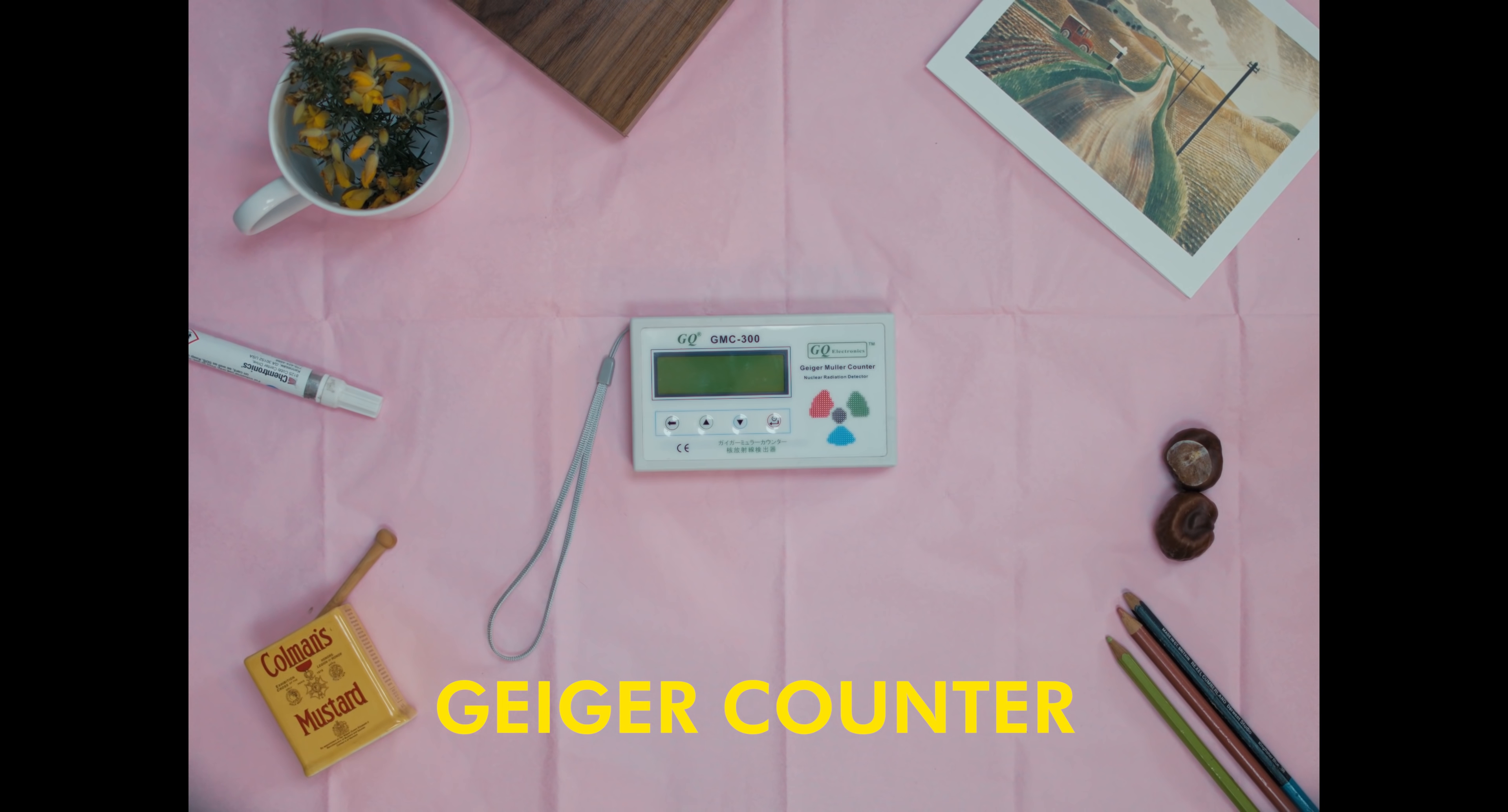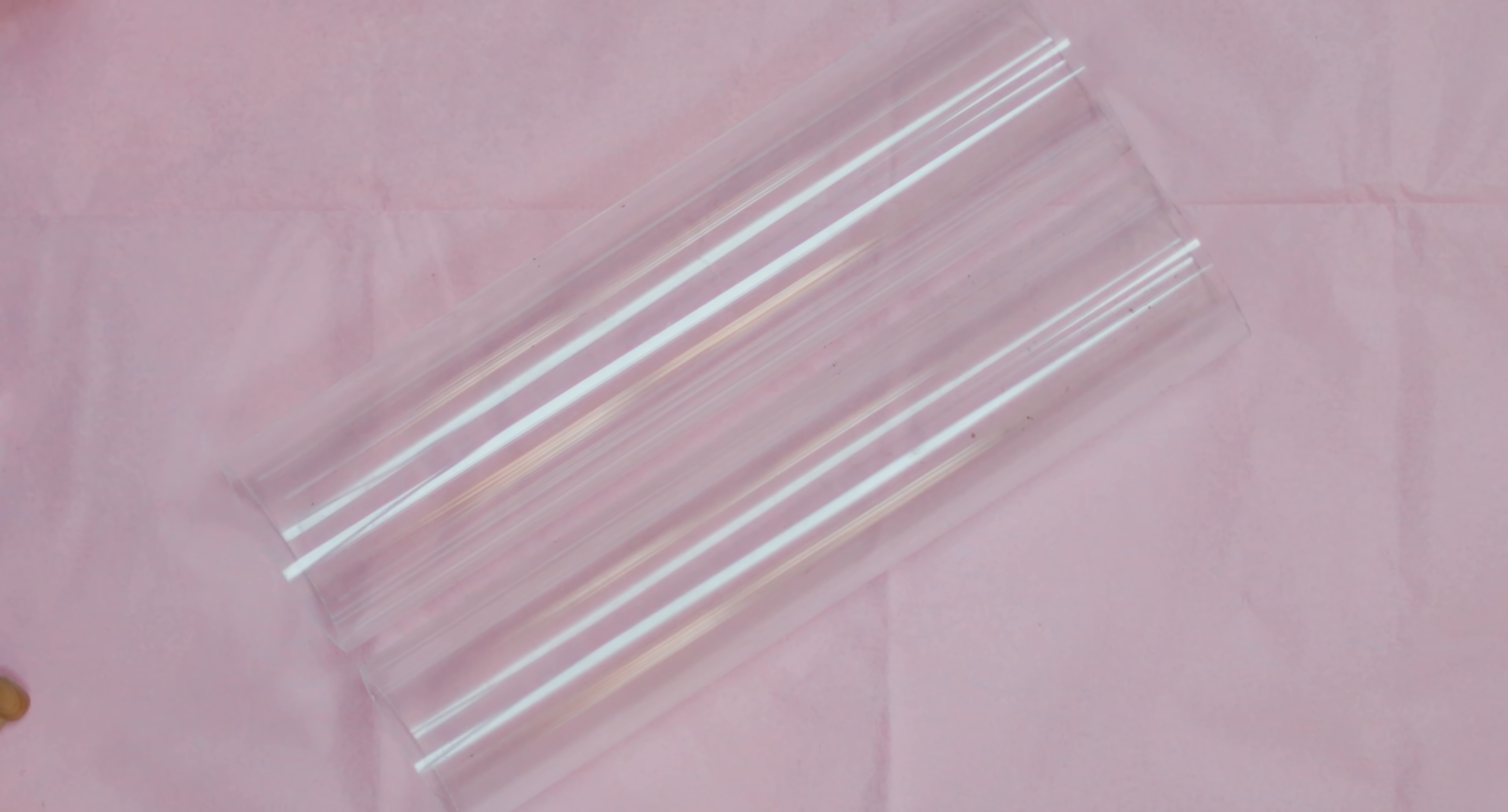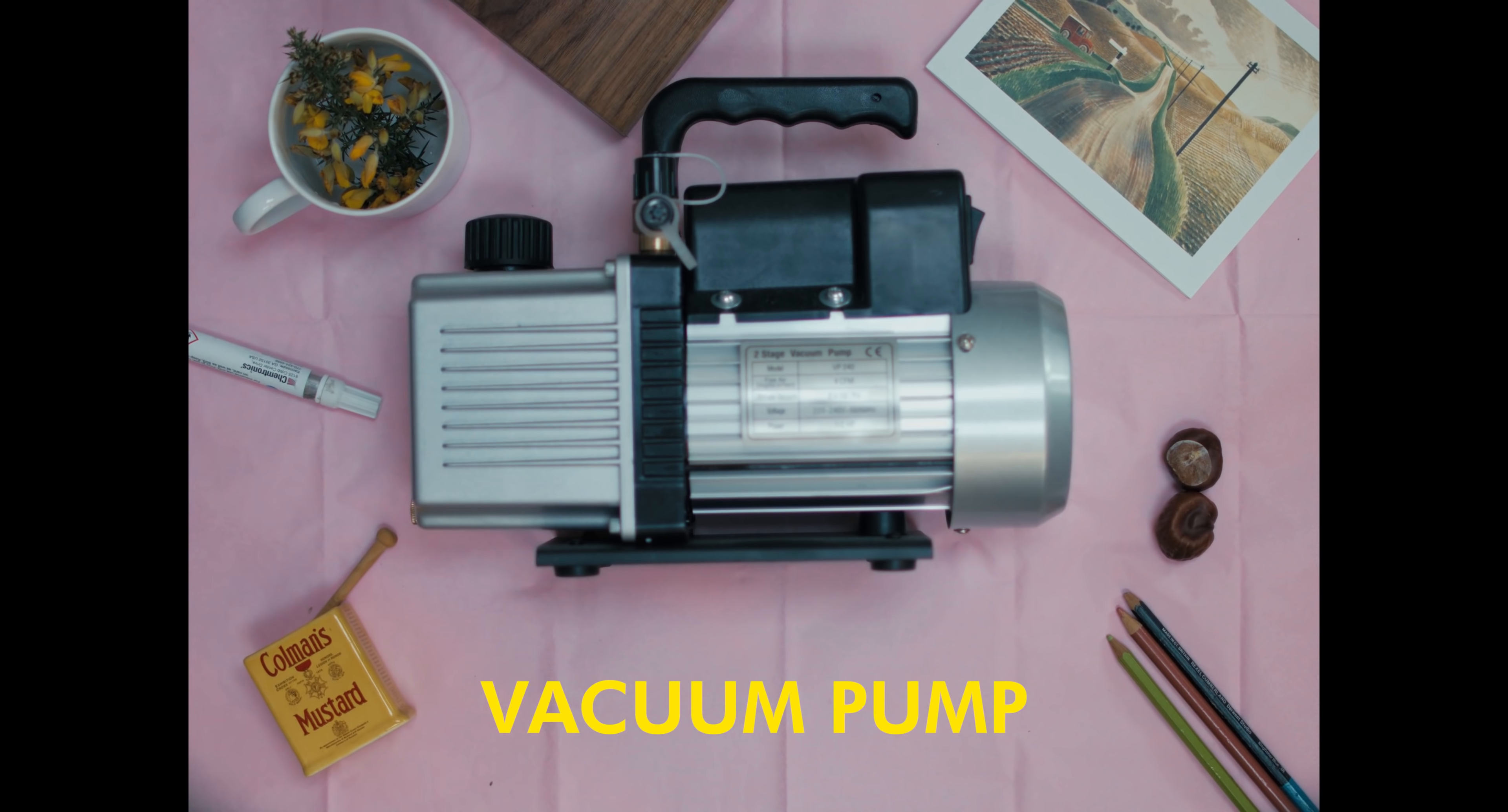So that's the general idea of what I want to try and make. I've drawn up a list of materials that I might need, and so far I've got a multimeter, a Geiger counter, acrylic tubes of various sizes, rubber tubing, copper piping, a vacuum pump, some aluminum, and this which is a high voltage transformer. Right, I've got everything I need. Now I'm gonna head to the workshop and start making this thing.